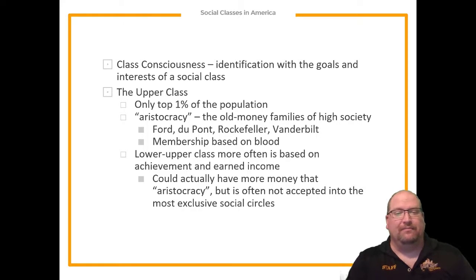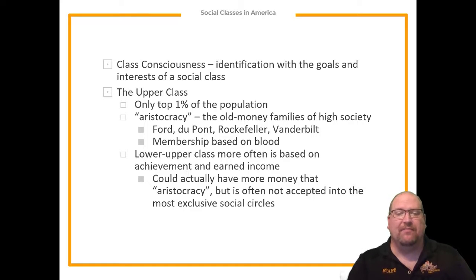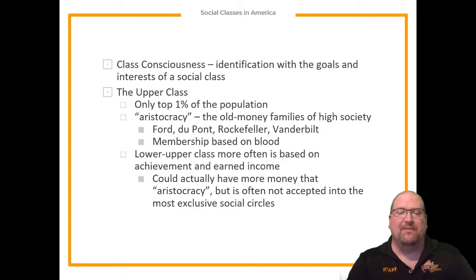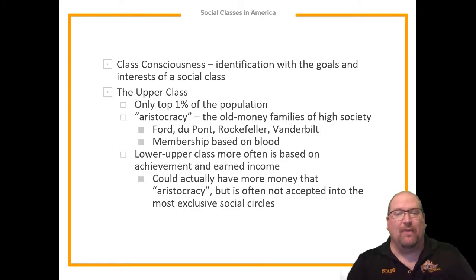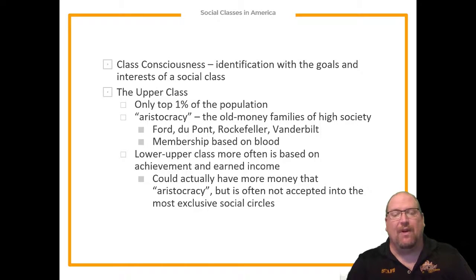We'll start from the top down. The upper class consists of only 1% of the entire population of the United States, and there are two levels. There is a group known as the aristocracy — people who have had a lot of money across generations, like Henry Ford, DuPont, Rockefeller, and Vanderbilt. These are families that have had money for a very long time, passing it down from parents, grandfathers, and great-grandfathers.